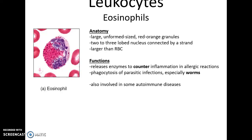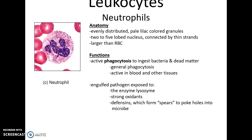Eosinophils have rather large reddish-orange granules throughout the cytoplasm and a two- or three-lobe nucleus. They are larger than red blood cells. Normally, they release enzymes to counter inflammation, including in allergic reactions. They are also involved in destruction of parasitic infections such as worms, and they can be involved in some autoimmune diseases.